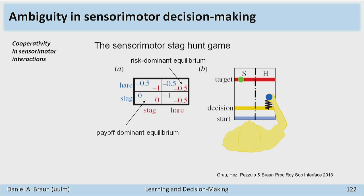There are basically two solutions to this game. One is the risk-dominant equilibrium: go for the hare, because there's no risk — you know what you get. The other is the stag, which is payoff-dominant because you get a lot, but it's risky.